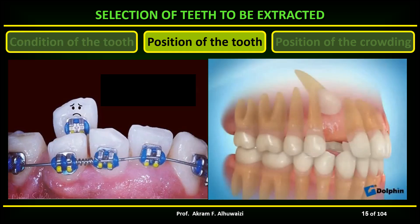For the position of the tooth, grossly malpositioned teeth which are difficult to align may often be the teeth of choice for extraction. The position of the apex of the tooth must be considered, as it is more difficult to move the apex than the crown. As you can see in this impacted canine, the most important thing is to study where the apex is — the crown can be drawn into the occlusion, but moving the apex is the difficult part.